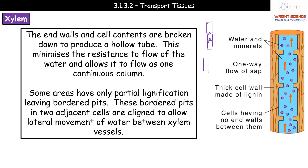Thinking back to module two on water — water molecules consist of two hydrogens and one oxygen. The hydrogens are delta positive and the oxygens are delta negative, giving a slight positive and slight negative charge. This means hydrogen bonds form between the oxygen of one molecule and the hydrogen of another, creating a continuous chain. That is how water flows as a continuous column up the xylem vessels — linking back to our biomolecules work.